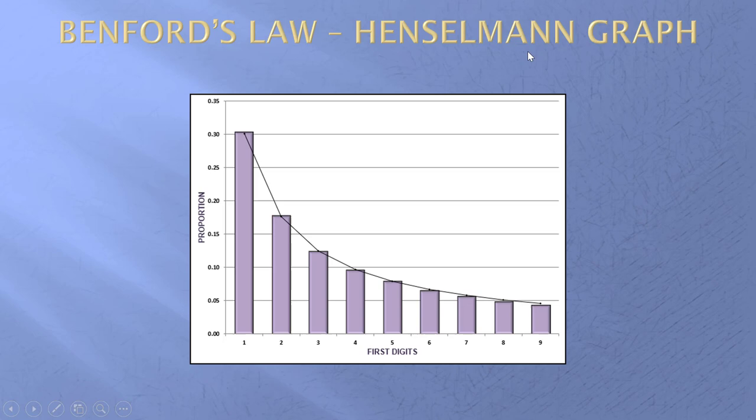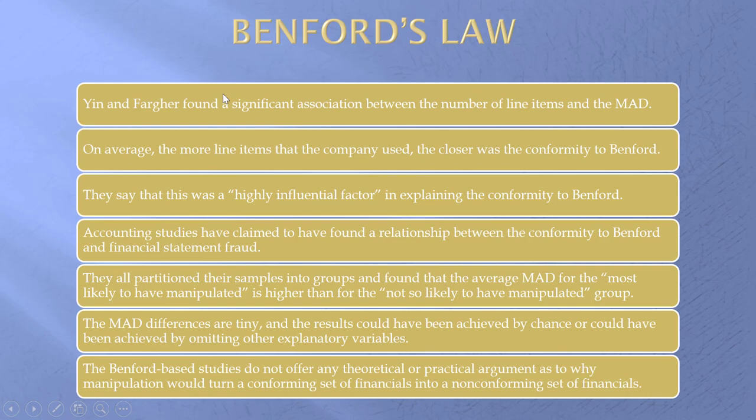This author and a number of others claim that it does. However, two Australian researchers found a significant association between the number of line items in the financial statements and the mean absolute deviation. In summary, fewer line items give a higher mean absolute deviation. Stated differently, the more line items a company used, the closer was the conformity to Benford and the lower was the mean absolute deviation. They say this is a highly influential factor.